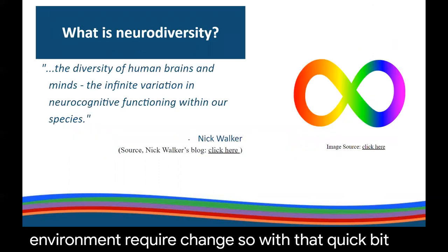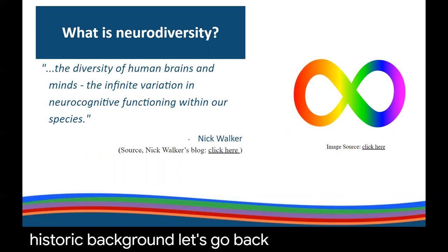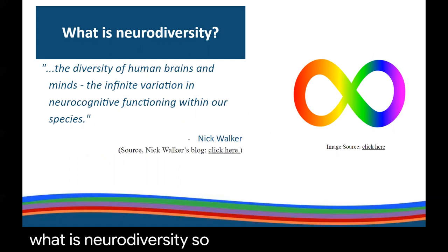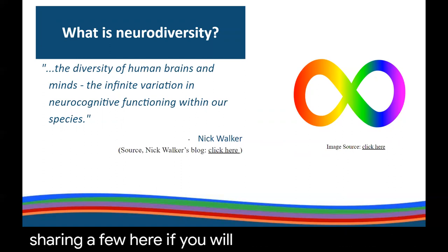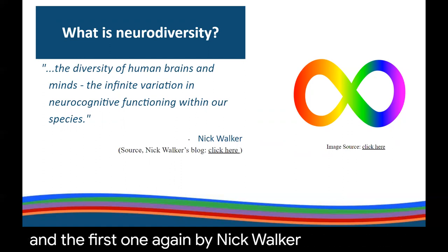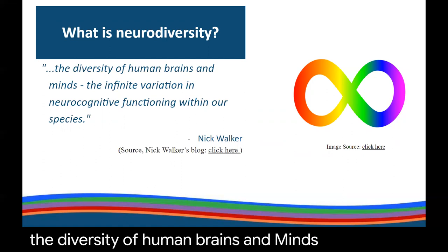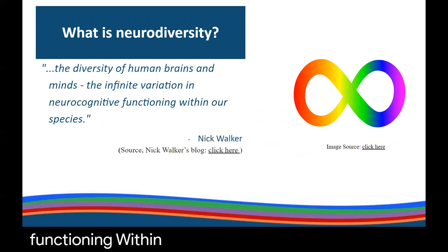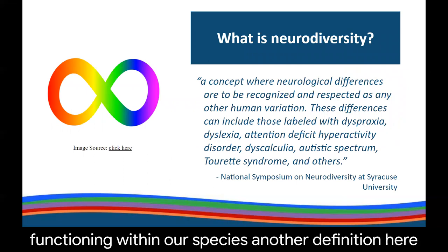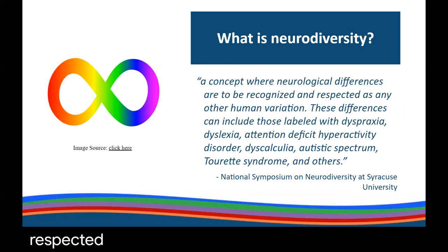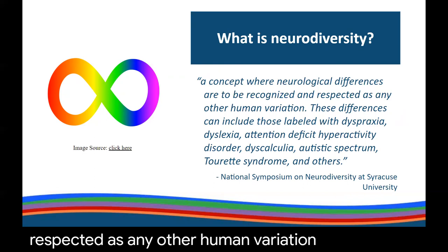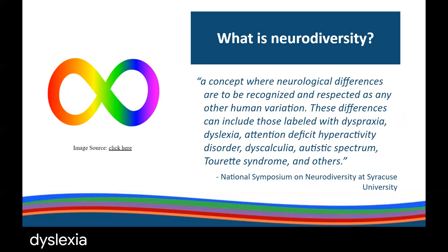Neurodiversity is a term coined by sociologist and autistic self-advocate Judy Singer in the late 1990s. There is no one agreed-upon definition, so here are a few well-established ones. Nick Walker defines neurodiversity as the diversity of human brains and minds — the infinite variation in neurocognitive functioning within our species. Syracuse University defines it as a concept where neurological differences are to be recognized and respected as any other human variation. These differences can include those labeled with dyspraxia, dyslexia, ADD, ADHD, autism, Tourette syndrome, and many others.